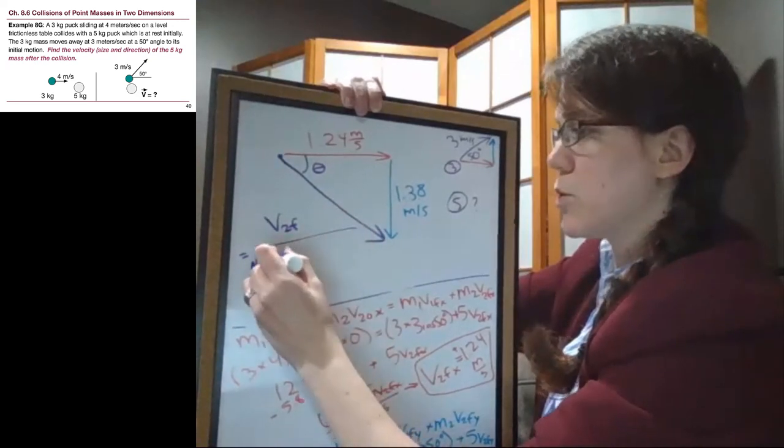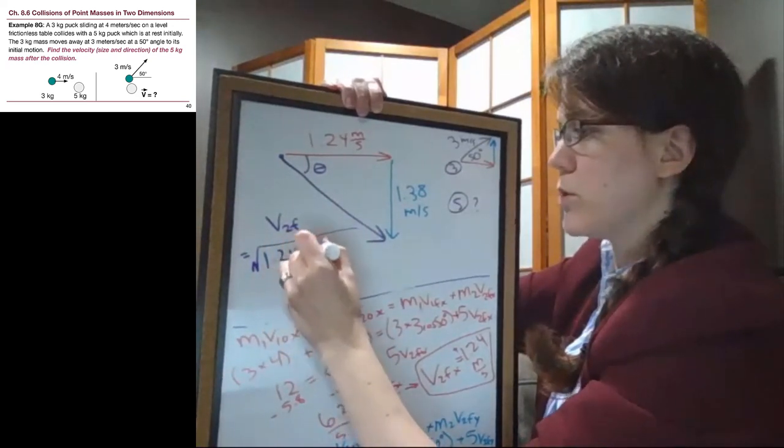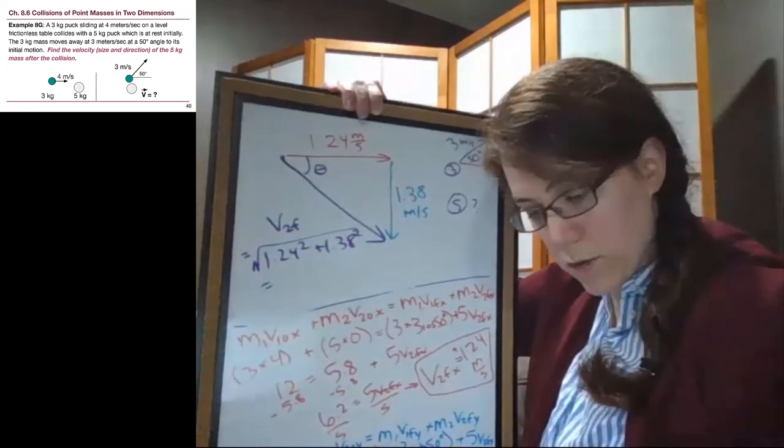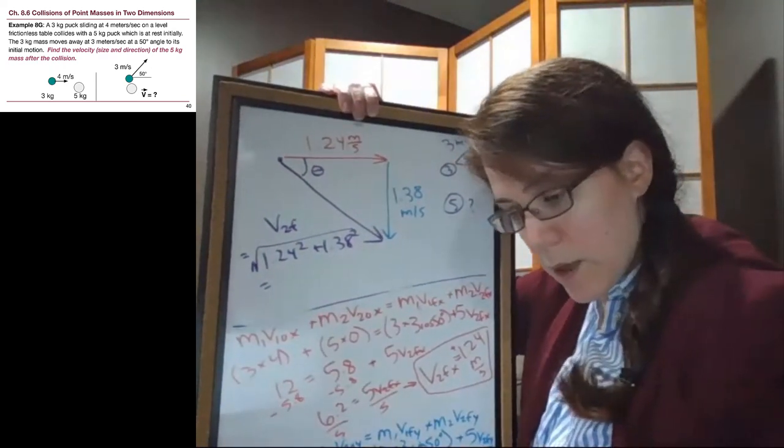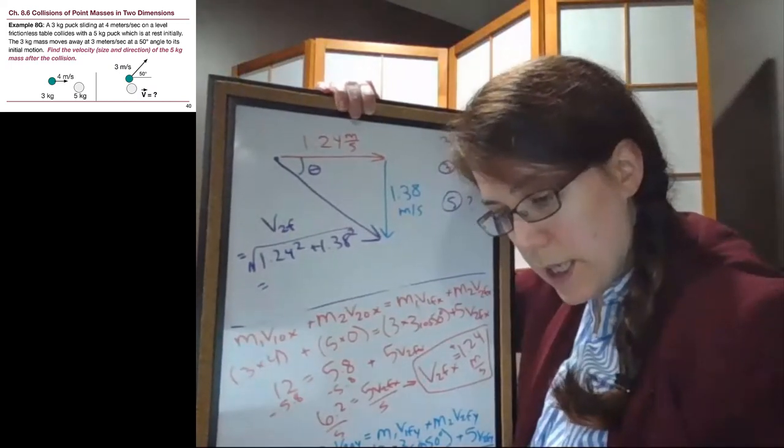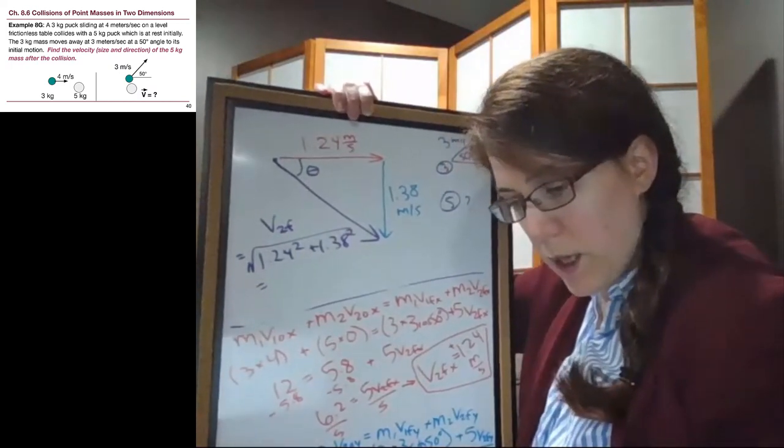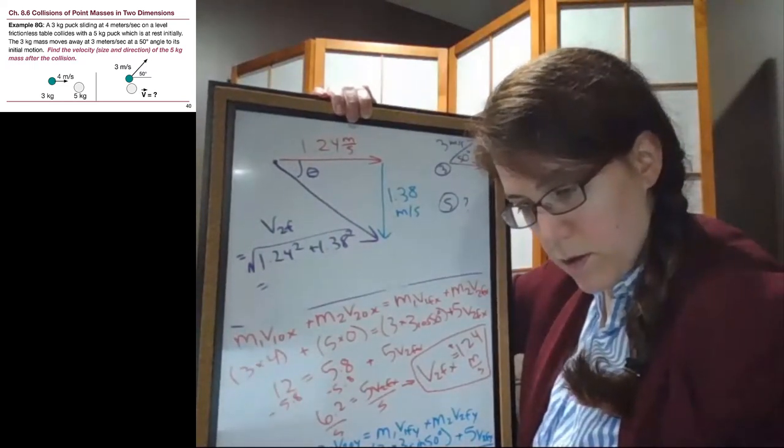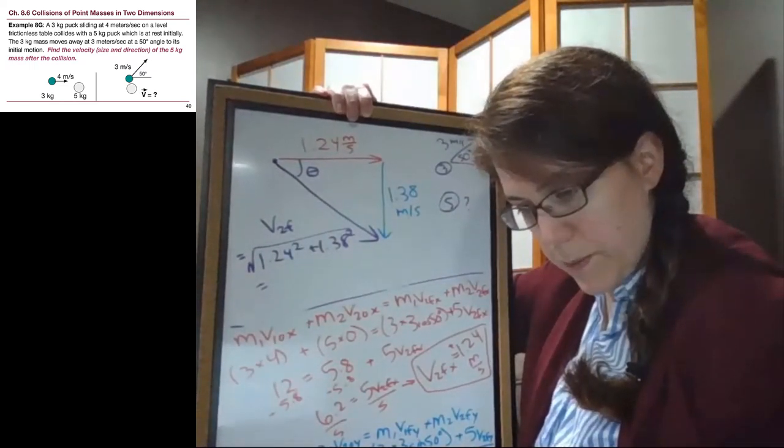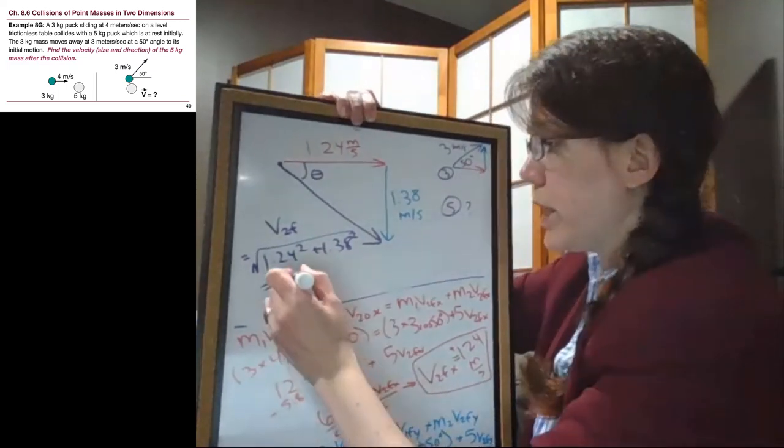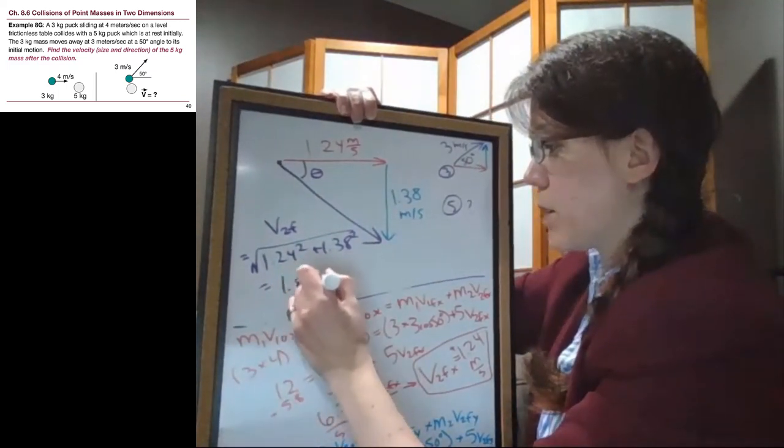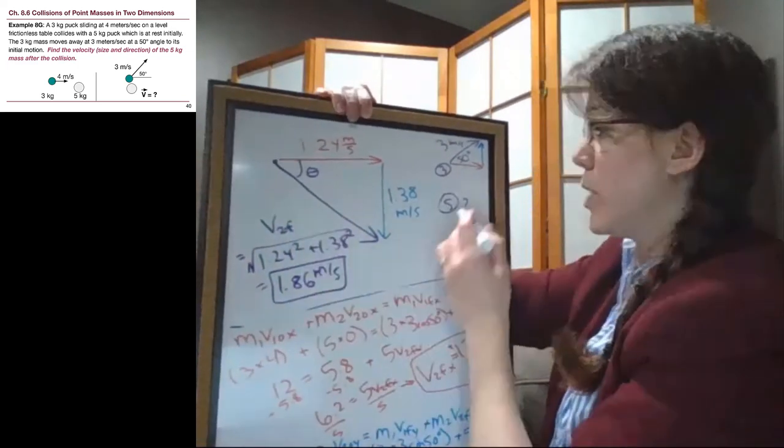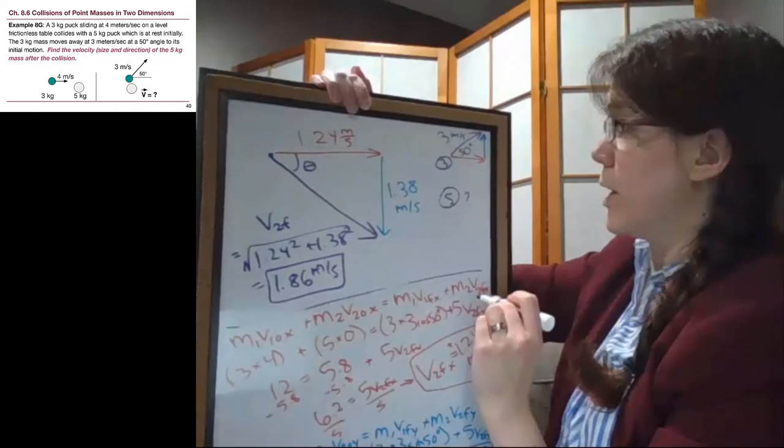And so to solve for it, we're going to take the square root of 1.24 squared plus 1.38 squared. And notice I do not use a minus sign here, because Pythagoras does not care about up and down or side to side. So we get 1.86 meters per second. So that is the final size of the velocity for the 5 kilogram block.